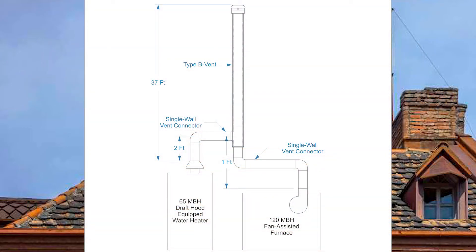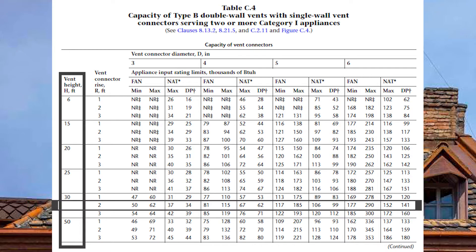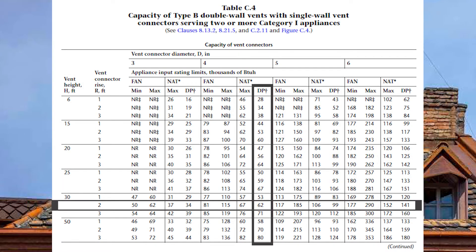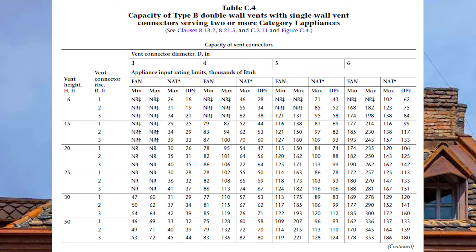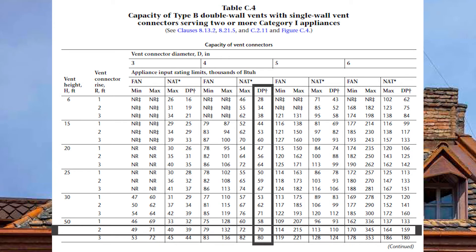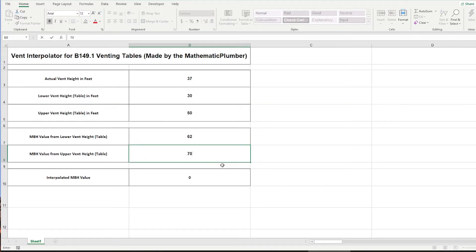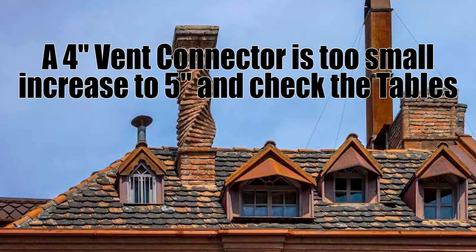Let's size the vent connector for the draft-hood-equipped water heater at 65 MBH. At the 30-foot vent height across on a 2-foot vent connector rise, Nat DP for 4 inch is good to 62,000 BTUs. At the 50-foot vent height with a 2-foot rise, 4 inch is good to a Nat DP of 70 MBH. Plugging 62 and 70 into the calculator gives an interpolated value of 64.8 MBH — slightly too small, so we bump up to 5-inch for the vent connector as well.